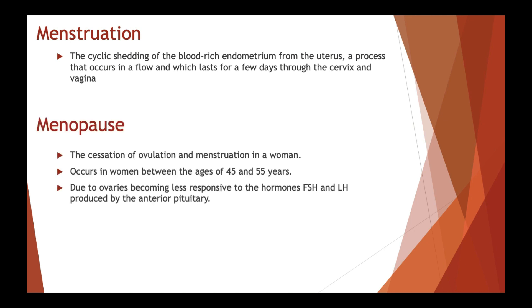Menopause is the cessation of ovulation and menstruation in a woman. It usually takes place between the ages of 45 and 55 years. During this time, the ovarian supply of oocytes runs out, estrogen produced by the ovary decreases over time, and the ovaries become less responsive to FSH and LH produced by the anterior pituitary. This results in menopause.